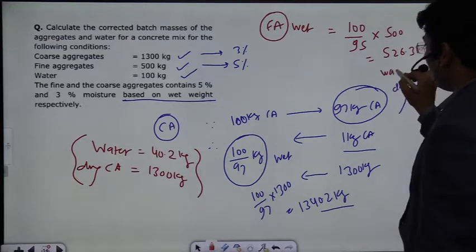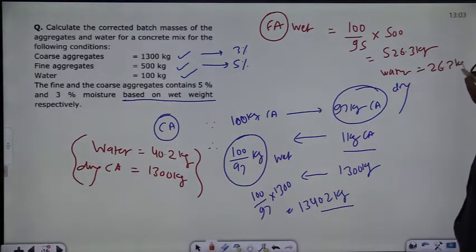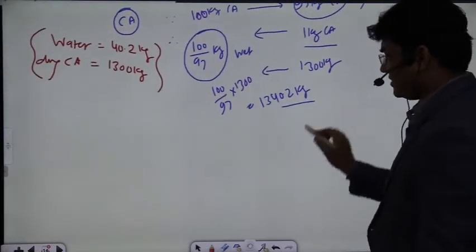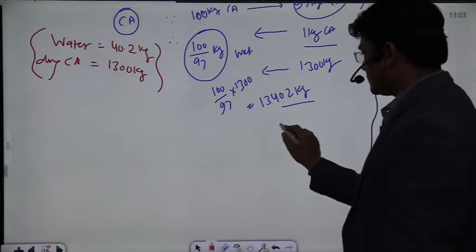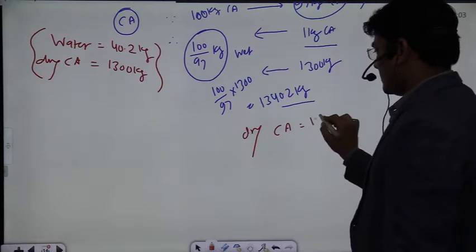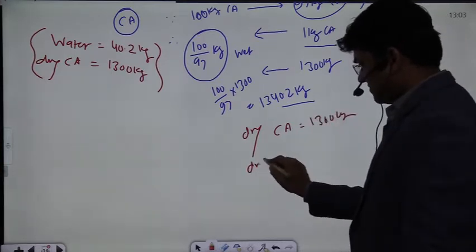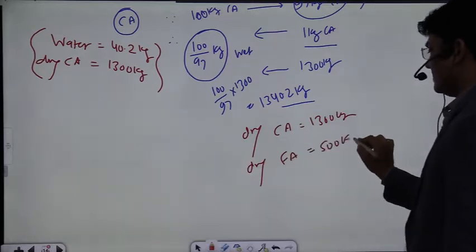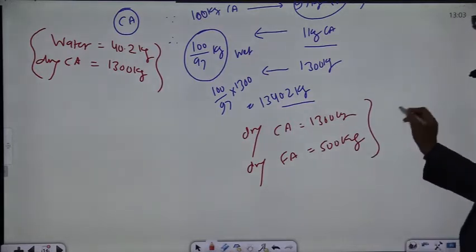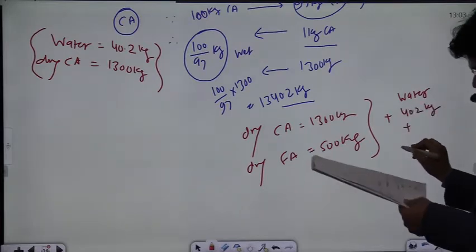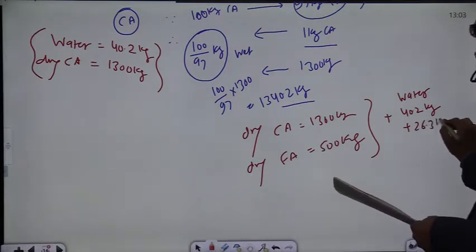So what does this mean? The coarse aggregate in dry form requires 1300 kg and the fine aggregate in dry form requires 500 kg. But when we batch these, there is additional moisture water. The water from the coarse aggregate is 40.2 kg and the water from the fine aggregate is 26.3 kg.